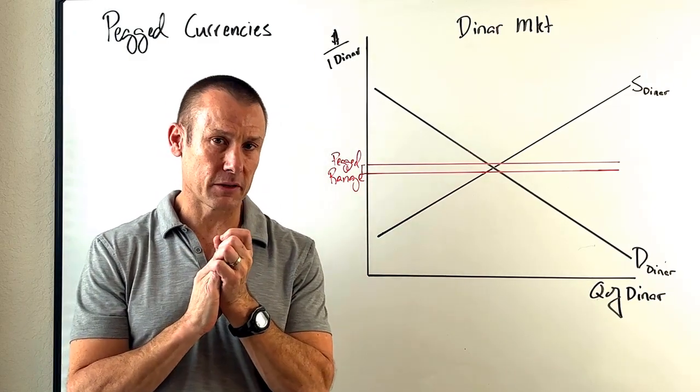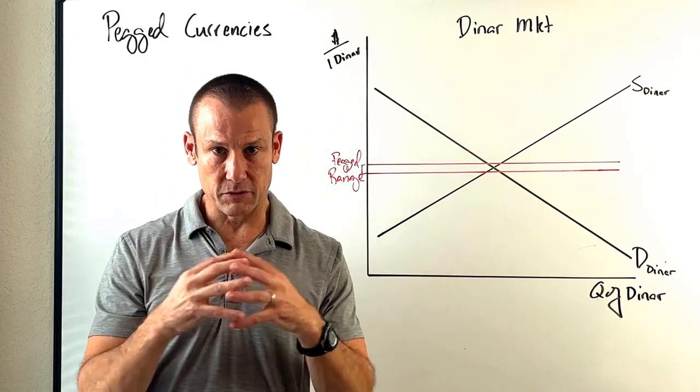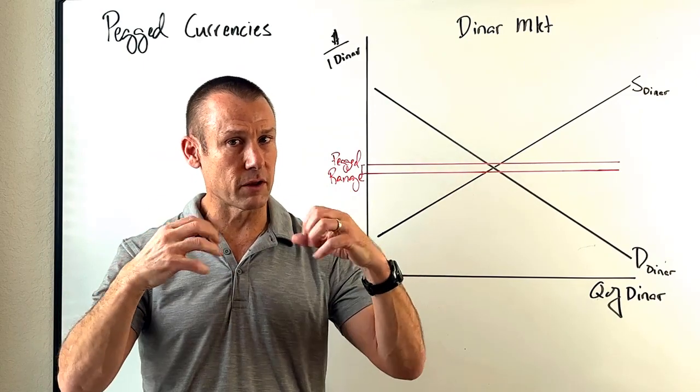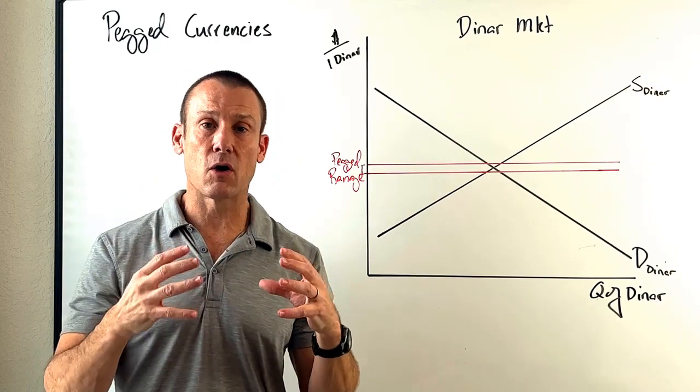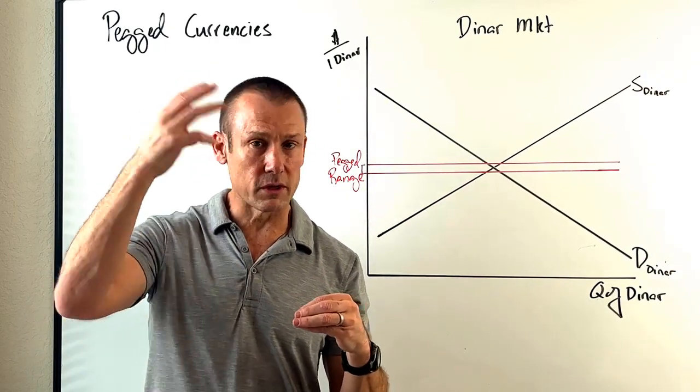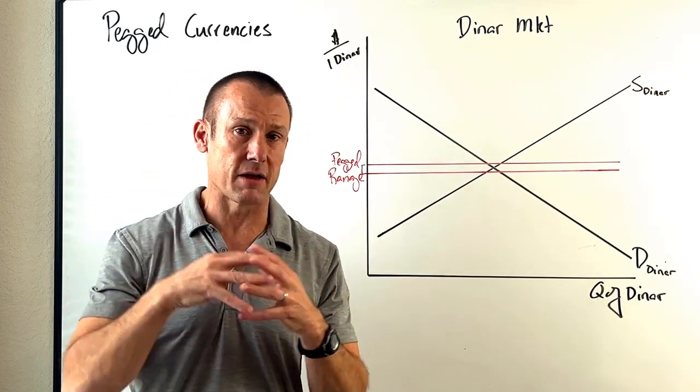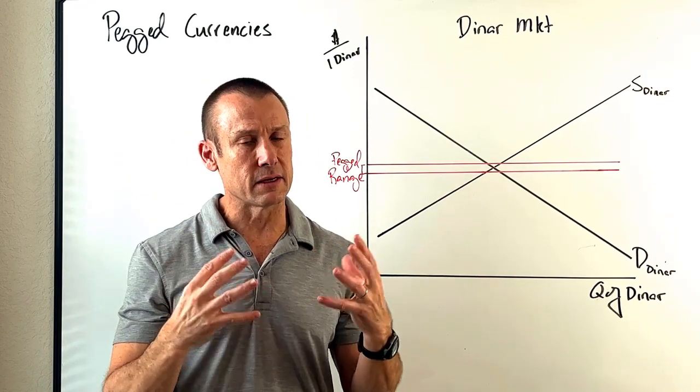Mainly, the only countries that peg their exchange rate are developing countries. Smaller countries that want to develop. All major developed countries do not peg their exchange rate. They allow their currency value to float in markets. They might manage that float, but they don't peg to anything.